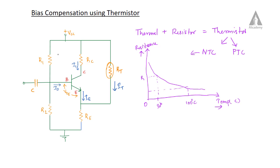This is our voltage divider biasing circuit with a thermistor connected from VCC to the emitter terminal. In our transistor, at the emitter terminal, a thermistor RT is connected from VCC. That is the thermistor biasing compensation circuit — it differs from the normal voltage divider biasing circuit. In the working, RT is the thermistor whose resistance value decreases when the temperature increases.